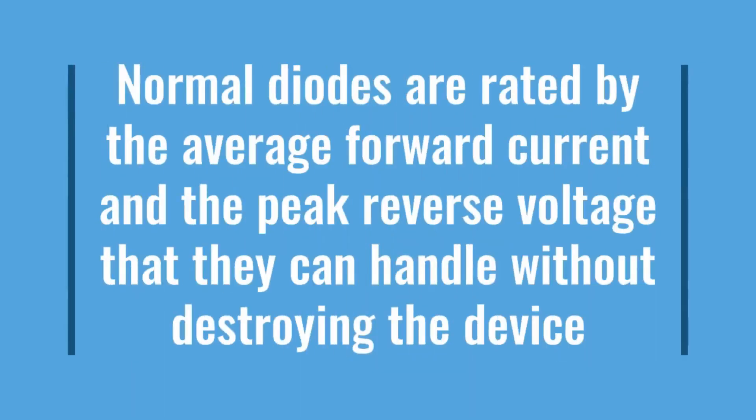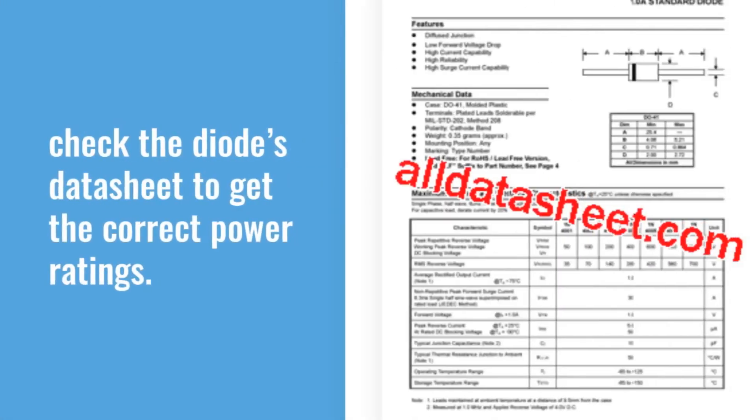Normal diodes are rated by the average forward current and the peak reverse voltage that they can handle. Always make sure to check the diode's data sheet to get the correct power ratings. There are several datasheet websites online which includes www.alldatasheet.com.